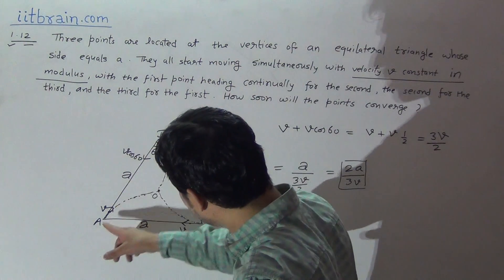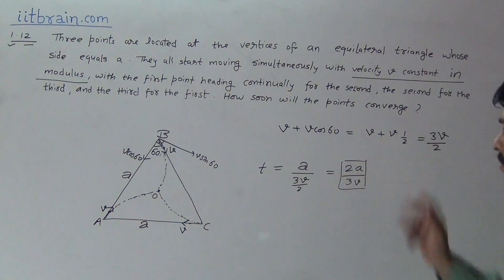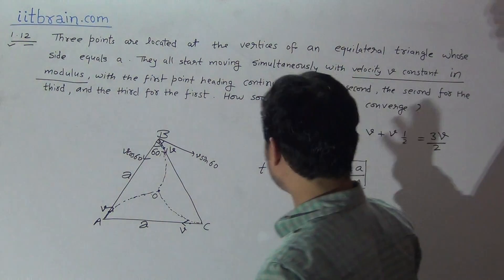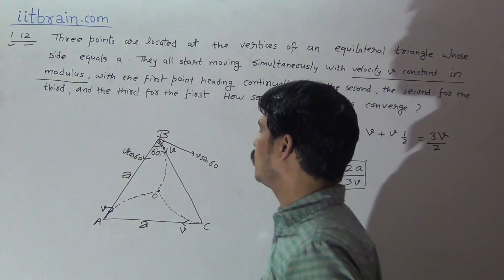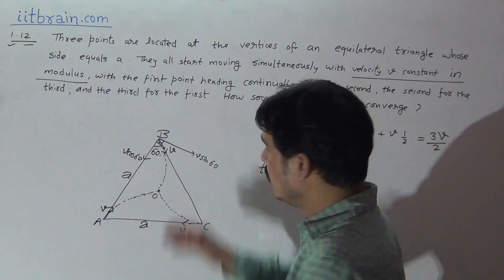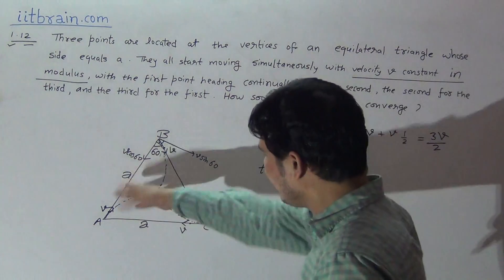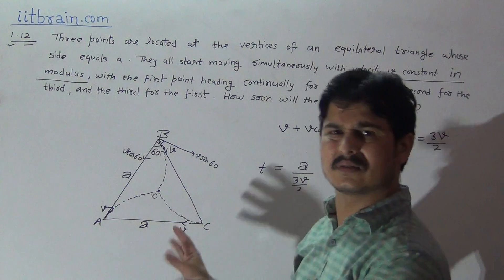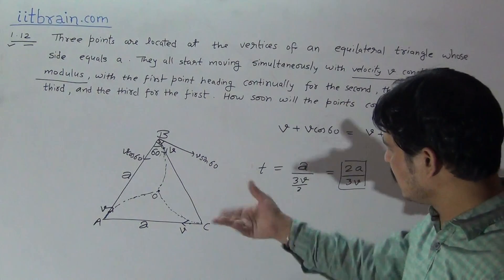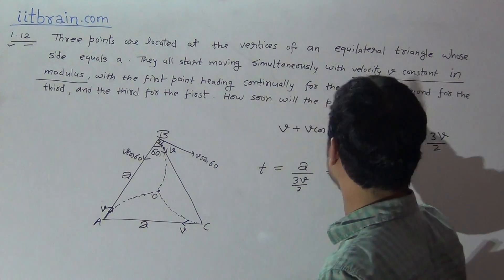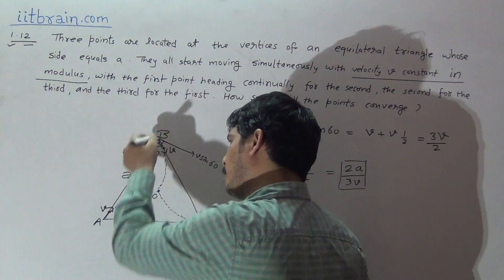Distance covered equals resultant velocity times time, so we can calculate time easily. It is not tough to calculate time because A is moving towards B with V velocity and B is moving towards A with V cos 60 velocity, so net velocity is 3V by 2. By this velocity, time taken to clear A distance will be 2A by 3V. This is not a complicated problem.